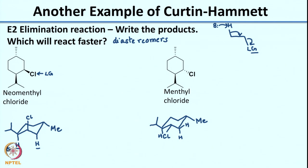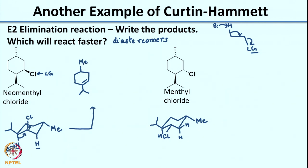If you have a base, what you would end up getting would be one product which corresponds to one hydrogen, and the other product would correspond to the other hydrogen getting eliminated. In the second case, what you see with this diastereomer is that you do not have any hydrogen which is anti-periplanar. So what would you need to do? The molecule would need to flip.